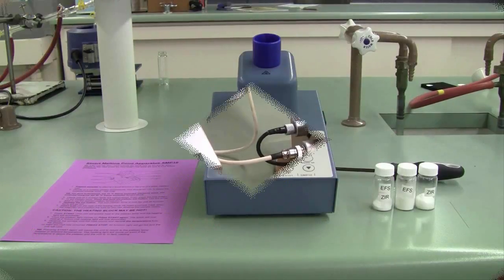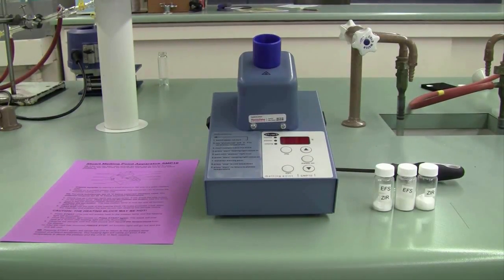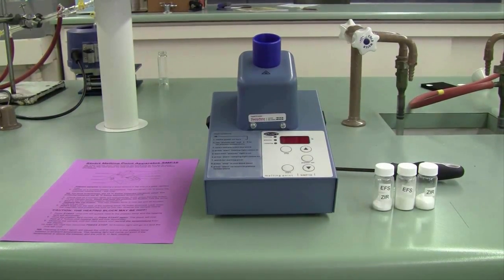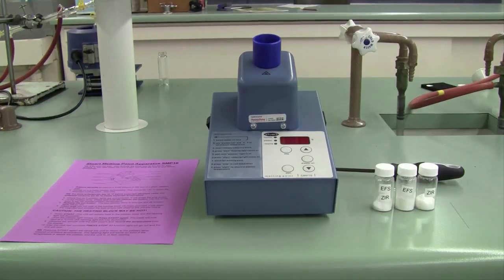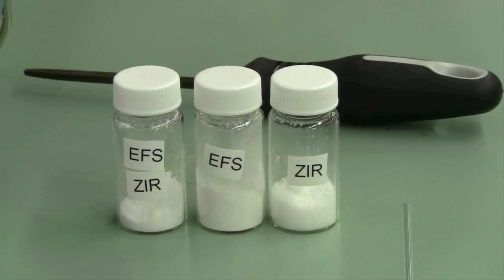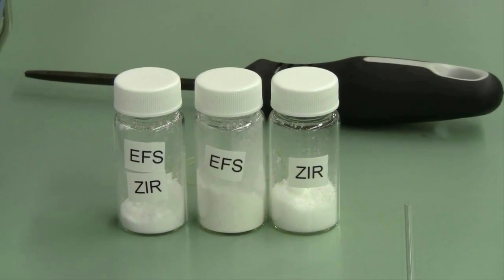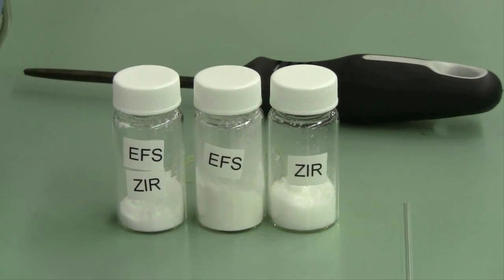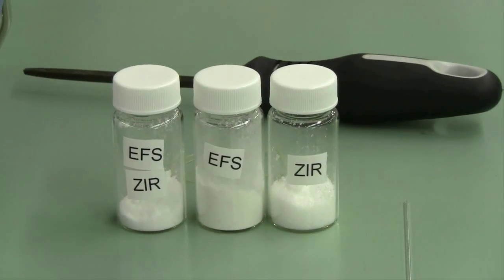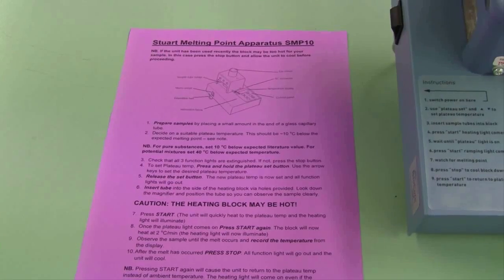The other part of your experiment involves the determination of the melting point of a series of unknown samples. You'll be provided with three samples, two with their unique identifications, and a third one that's a 50-50 mixture of the first two samples. Your job is to determine the identity of these samples and whether the two individual unknowns are the same material or two different chemicals.